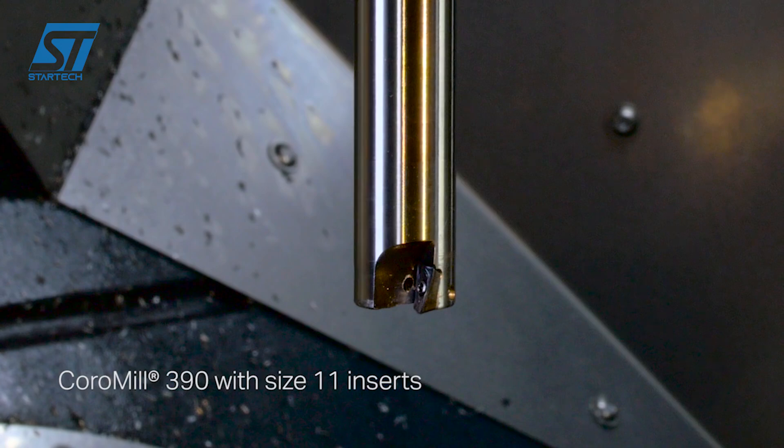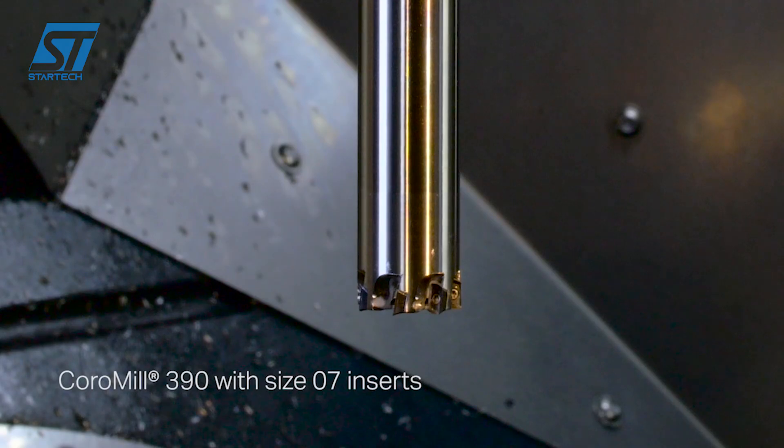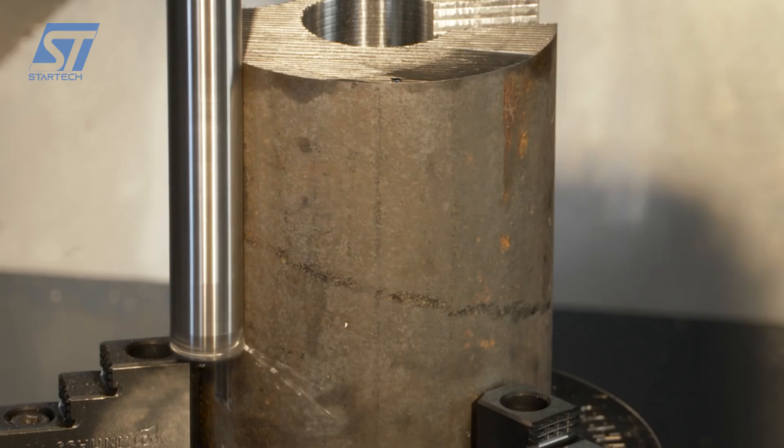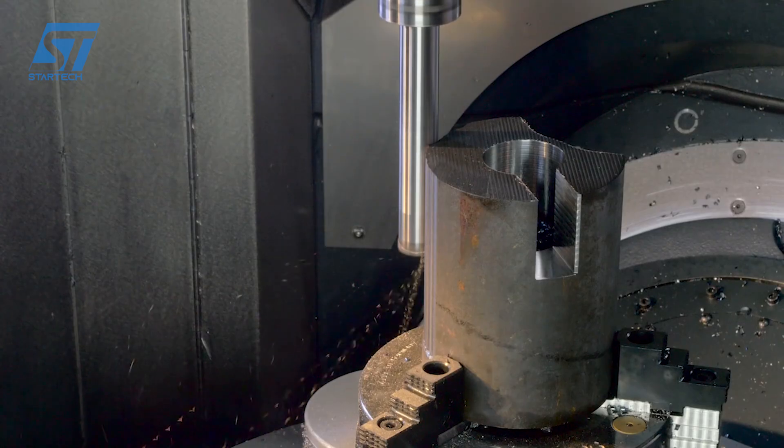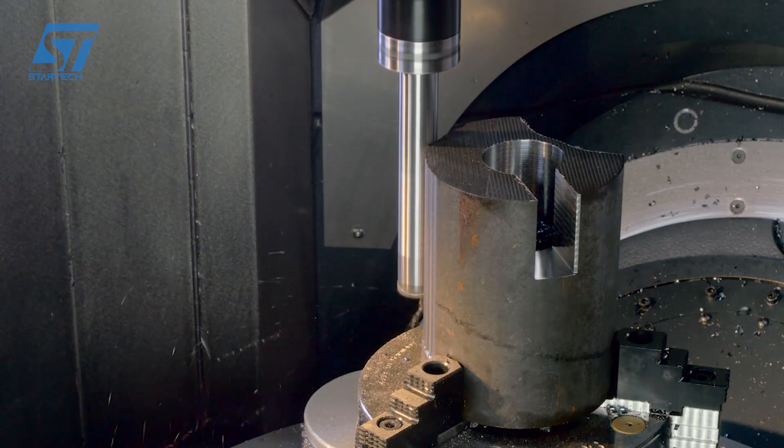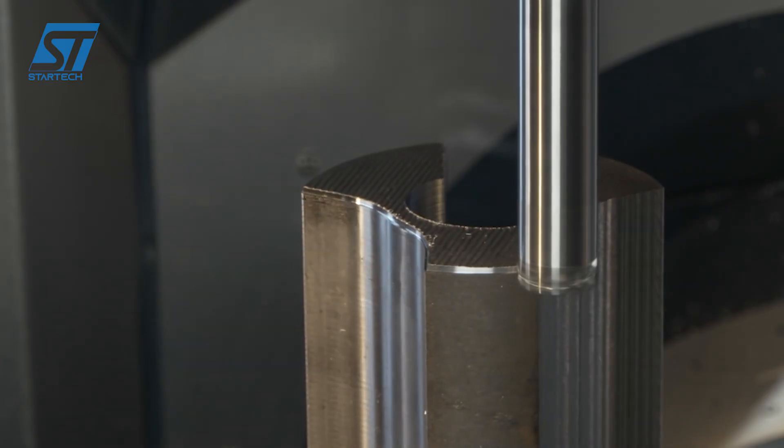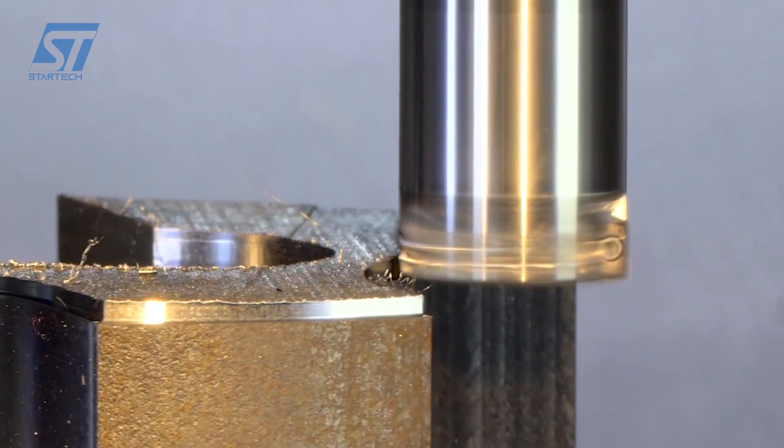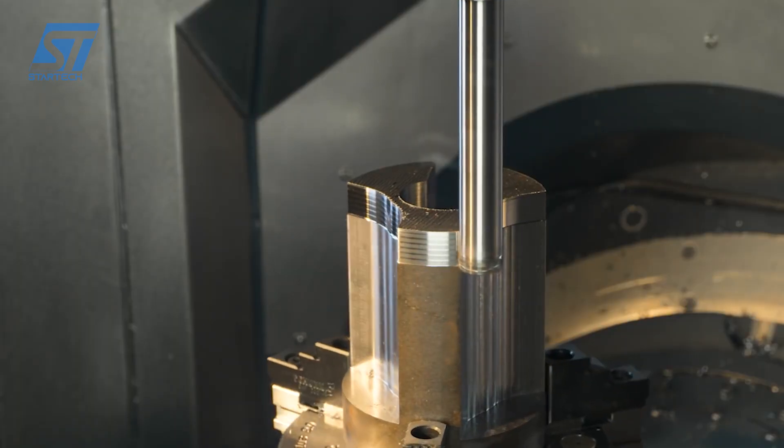The combination of CoroMill 390 and Silent Tools is particularly effective for smaller diameter cutters, which are more prone to vibration. It excels in applications with long overhangs, where vibration is typically a significant challenge. By allowing for higher cutting data and reducing downtime due to tool changes or adjustments, it significantly boosts productivity. The reduction in vibration leads to a superior surface finish on the machined part.